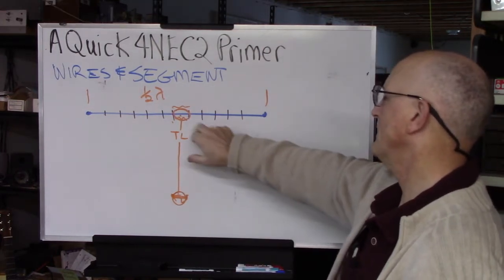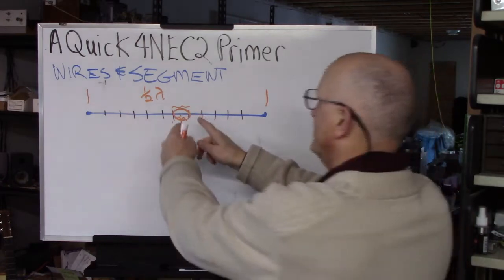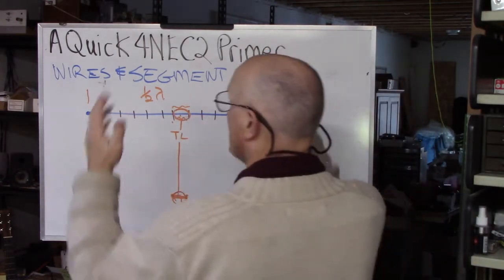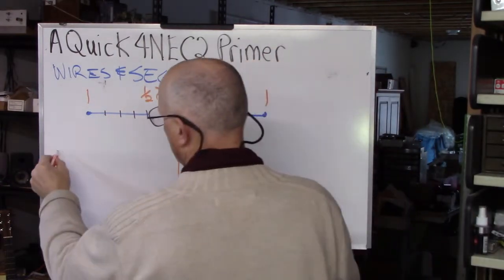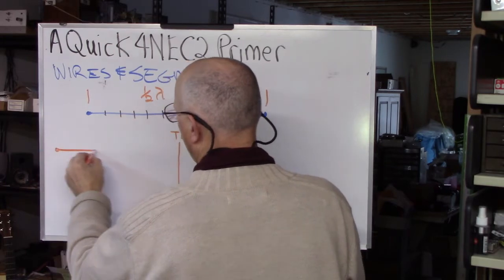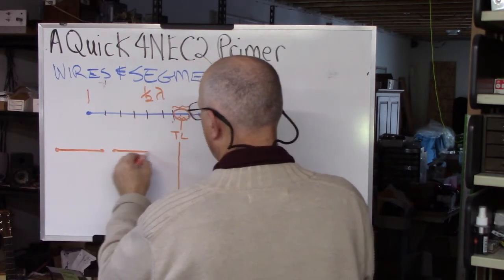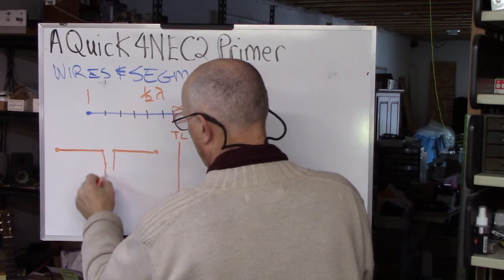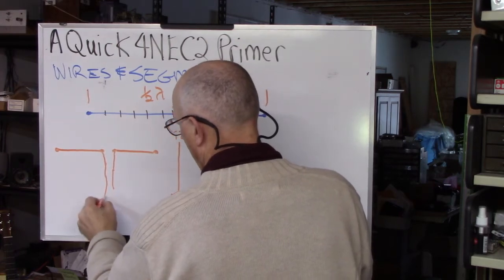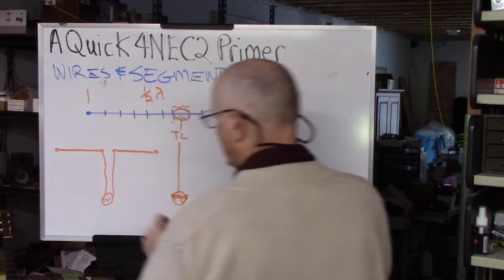you have your transmission line segment, you have your center insulator, and all of this is interpreted by 4NEC2 as a wire to here, a wire to here, your transmission line coming down here, and down here is your signal generator.